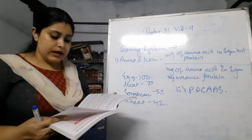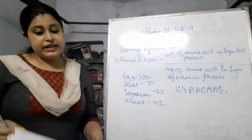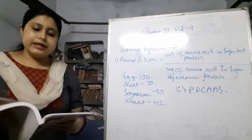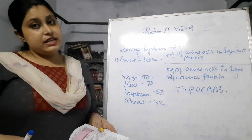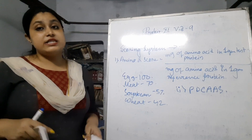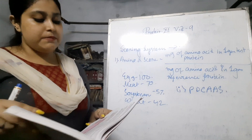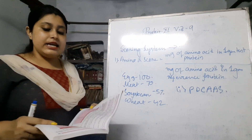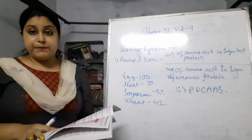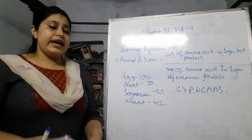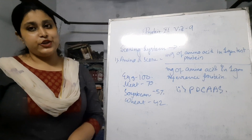So in assessing the quality of protein, we learned some biological assessments: BV, NPU, PER, and NPR. After that, we learned some amino acid scoring: the amino acid score and PDCAAS. I am completing this chapter with this video. I will make some new videos from a new chapter. Till then, thank you very much.